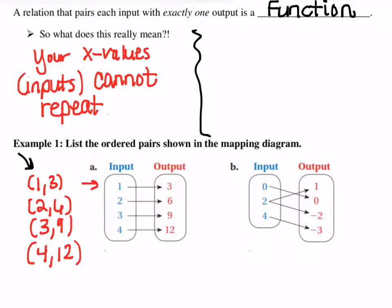But in part B, you'll notice that this 2 here, this input, see how it branches off to two values? That means that that 2, when we put them out as ordered pairs, which we're jumping ahead a little bit, but that's okay. 2 goes to the 1, and 2 also goes to the negative 2. Meaning our X value repeated, and we can't let that happen. It's a relation, but it's not a function.